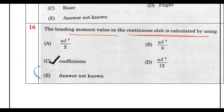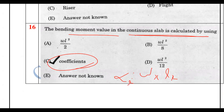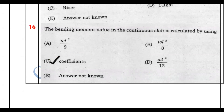The bending moment coefficient for a two-way slab depends on alpha (α), where αx is the coefficient, wx is the load, and nx and y are the respective span dimensions. This is the standard IS code formula.